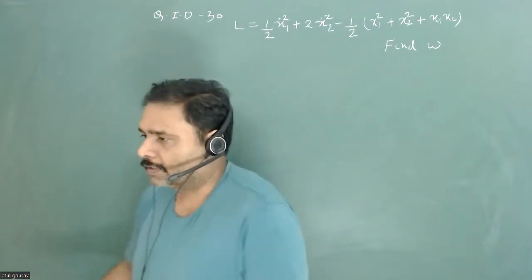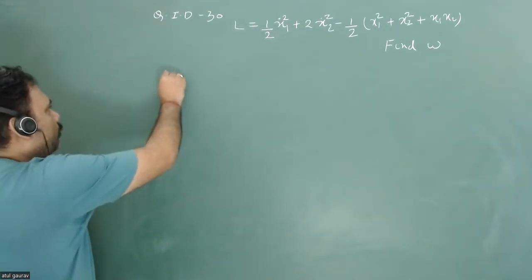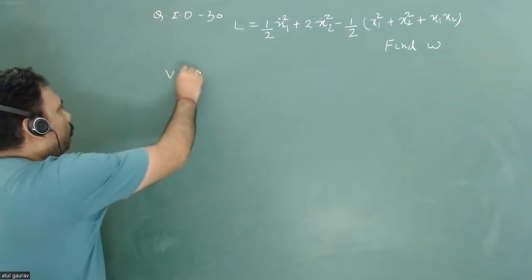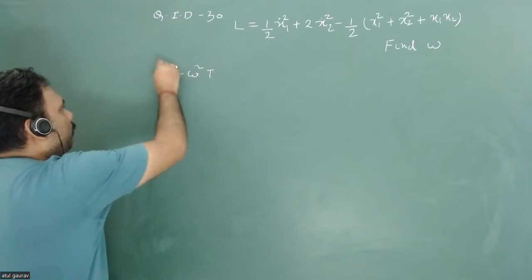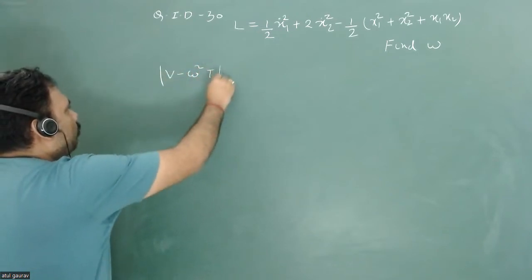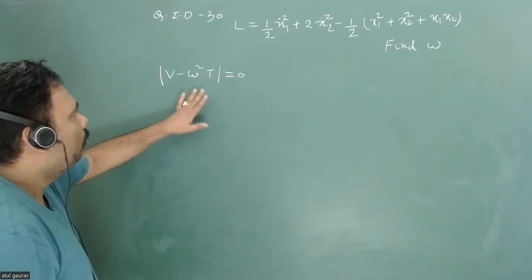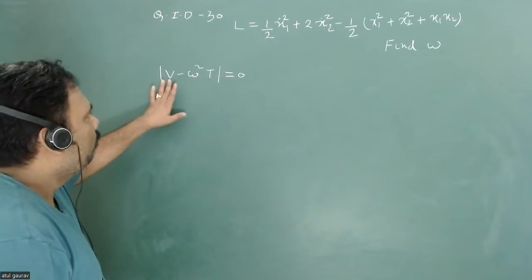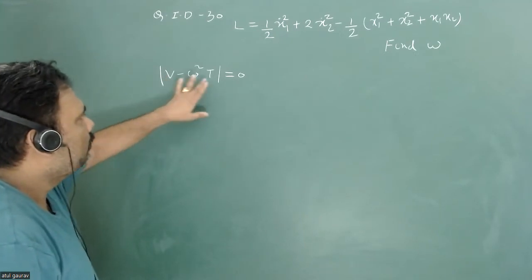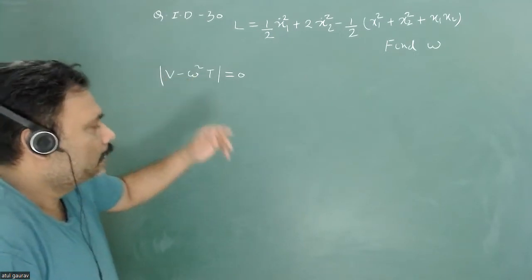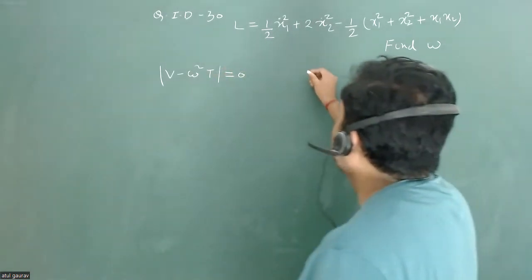The secular equation is: the determinant of (V minus omega squared T) equals zero. The most important challenge is finding the V matrix and the T matrix from the given Lagrangian.